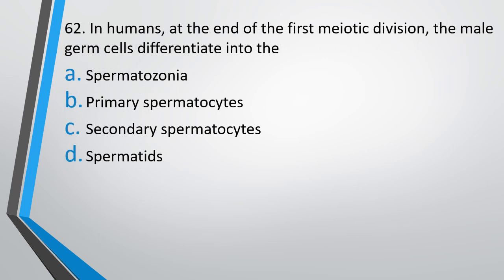Question number 62: In humans, at the end of the first meiotic division, the male germ cells differentiate into — spermatogonia, primary spermatocyte, secondary spermatocyte, or spermatid? The correct answer is Option C, secondary spermatocytes.